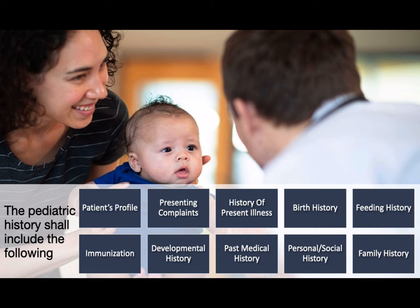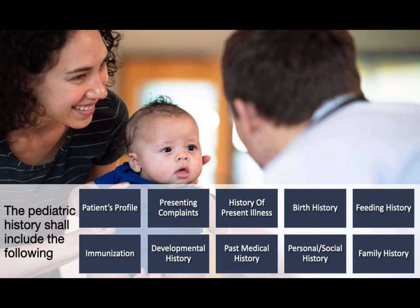The history of an infant should contain the patient's profile, the presenting complaint or chief complaint, and the history of present illness. What makes a pediatric history different from an adult history is that you should also ask for the birth history, feeding history, immunization history, developmental history, past medical history, personal social history, and family history.